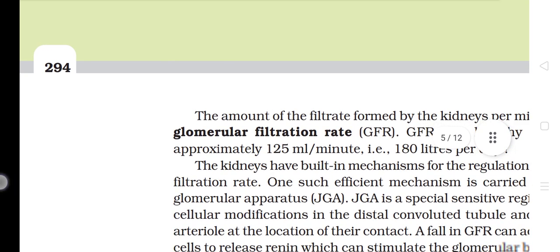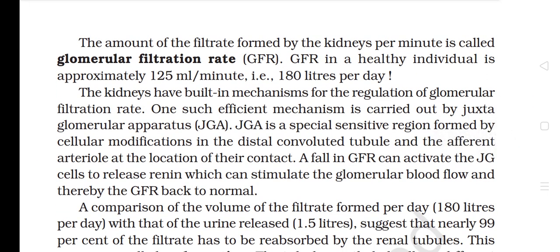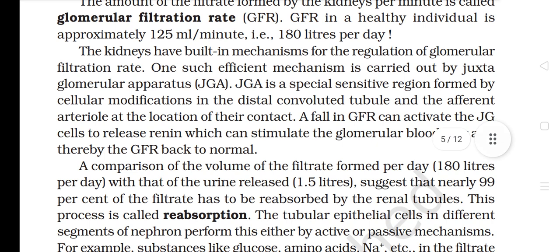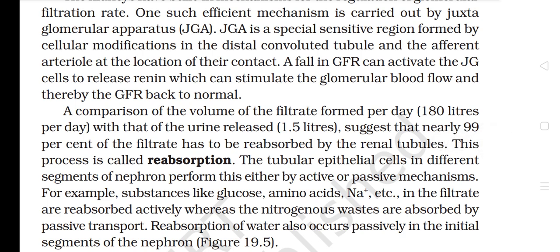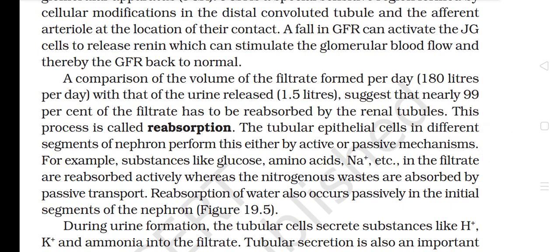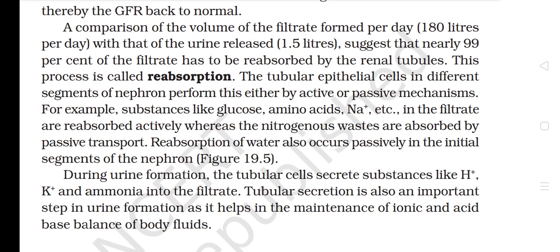Blood is filtered so finely through these membranes that almost all constituents of plasma except proteins pass into the lumen of the Bowman's capsule — this is considered a process of ultrafiltration. The amount of filtrate formed per minute is called glomerular filtration rate (GFR). GFR in a healthy individual is approximately 125 ml per minute, that is 180 liters per day. The kidneys have built-in mechanisms for regulation of GFR. One such mechanism is carried out by the juxtaglomerular apparatus (JGA) — a special sensitive region formed by cellular modifications in the DCT and the afferent arteriole at their contact point. A fall in GFR can activate JG cells to release renin, stimulating glomerular blood flow back to normal.